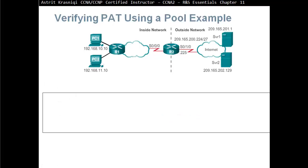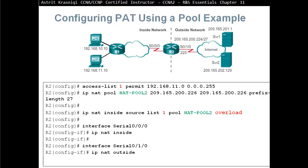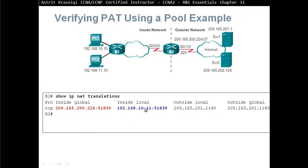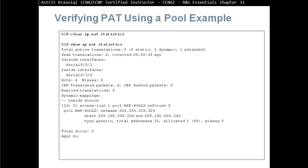To verify a PAT using a pool example, we use SHOW IP NAT TRANSLATIONS, and we can see the translated IP address with port number mapped to the outside address and port number. The router tries to keep port numbers the same, but if two PCs use the same port number, it will assign a different one. We can also use CLEAR IP NAT STATISTICS and then SHOW IP NAT STATISTICS to see one dynamic NAT, one extended entry, and one address allocated from the pool.